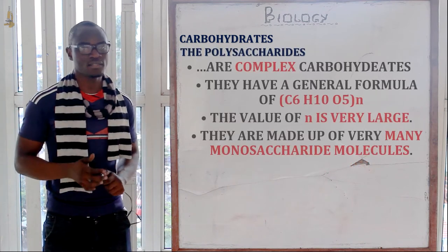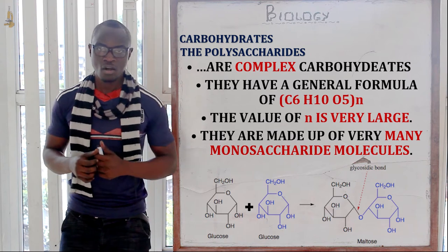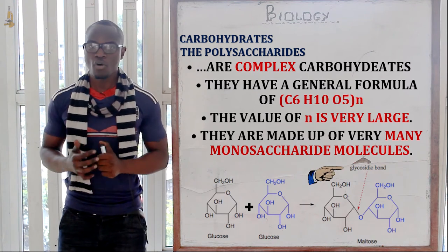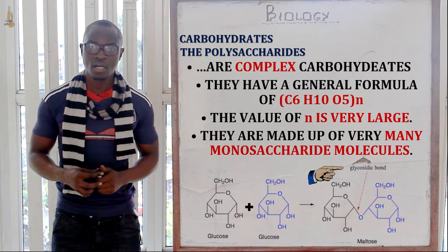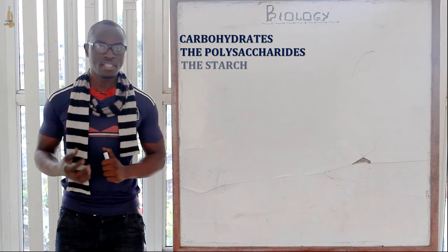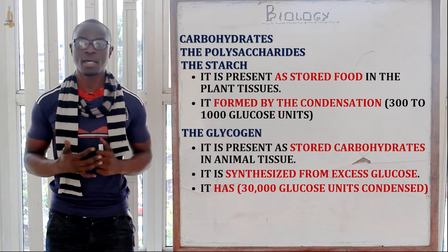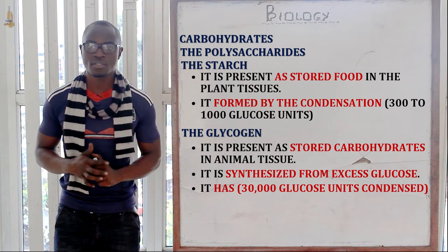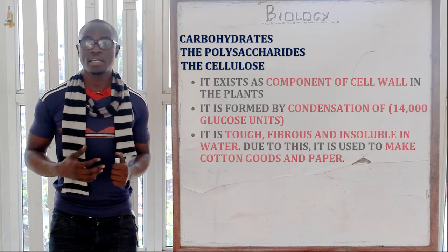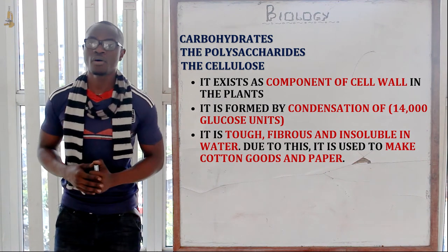Polysaccharides are complex carbohydrates with the general formula (C₆H₁₀O₅)ₙ, where N is very large. They are formed by the combination of many monosaccharides, with the bond between units called a glycosidic bond. The main polysaccharides are starch, which is the storage medium in plants after photosynthesis; glycogen, the storage carbohydrate in animal cells stored in the liver and muscles; and cellulose, a structural carbohydrate that is the major raw material for cell walls in plants.